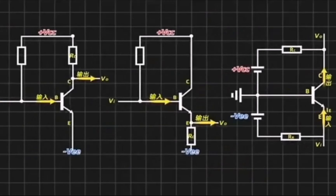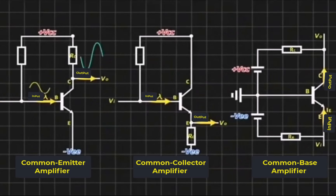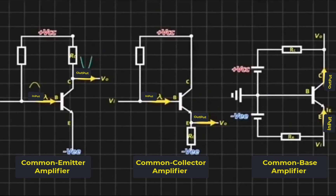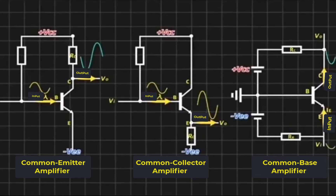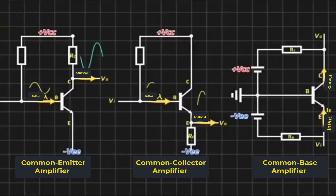In summary, as the input current signal at the emitter becomes larger, it acts on IE through current superposition, causing IE to decrease. The final output is a voltage signal amplified in the same direction. The input is at the emitter, the output is at the collector, and the shared terminal is the base. So this is a common-base amplifier circuit, which can amplify voltage in the same direction.